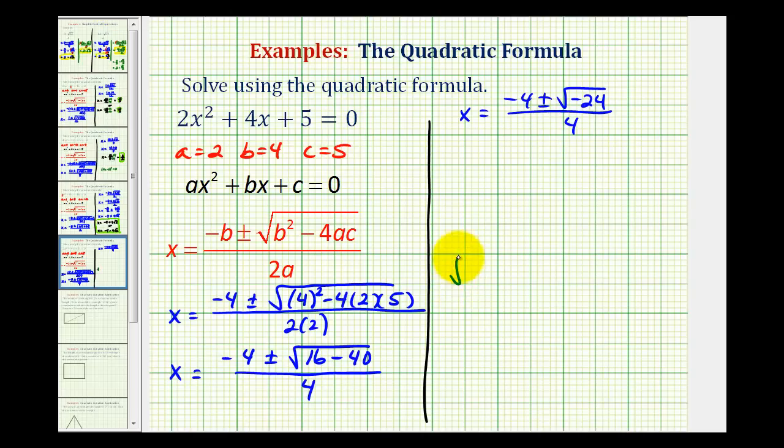So the square root of negative 24 is equal to the square root of negative 1 times 24. And now we want to find perfect square factors of 24. So the only perfect square factor is going to be 4, so we can write this as negative 1 times 4 times 6.